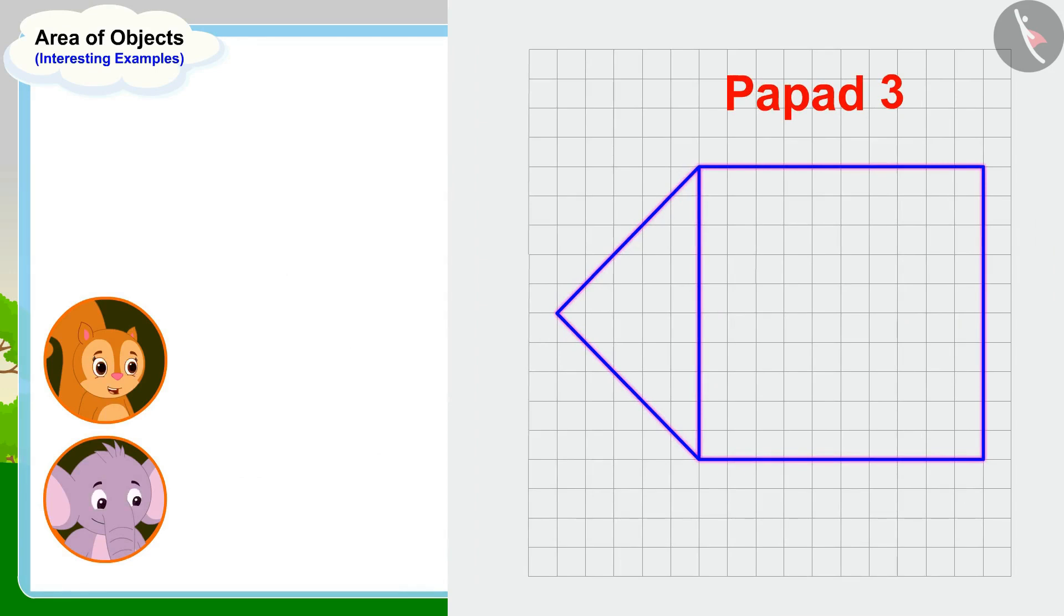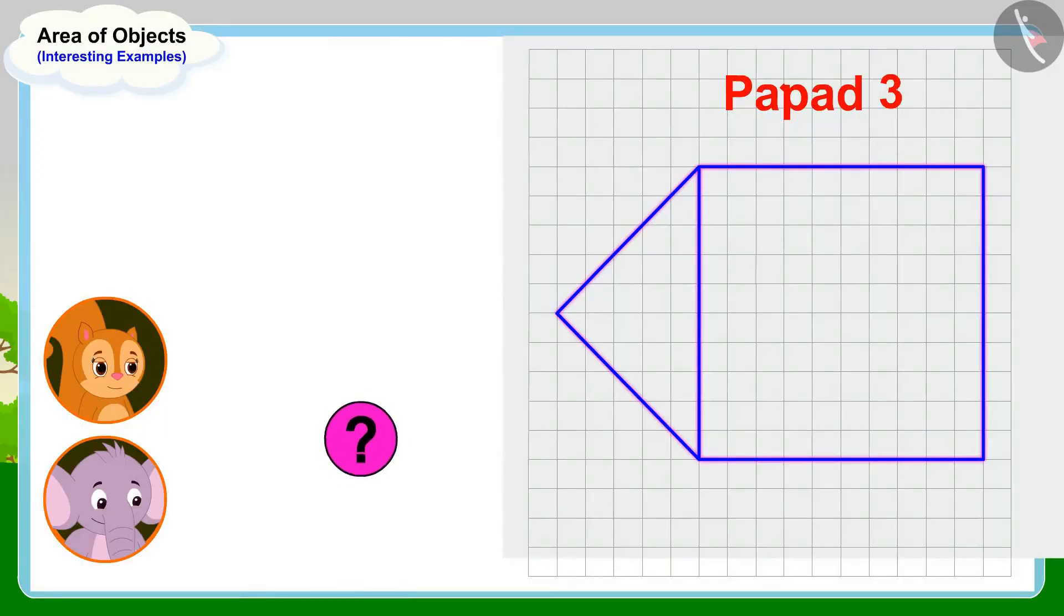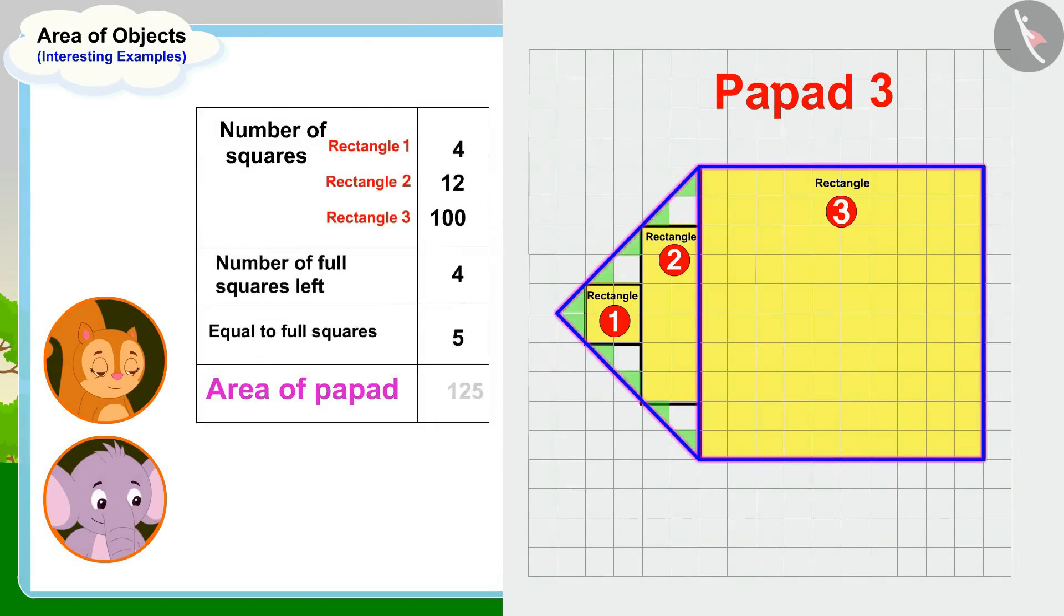Children, can you help Appu and Chanda by finding the area of this popper? If you wish to, you may stop the video and find the answer. We can find the area of this popper by making rectangles and squares in this way. The area of this popper is 125 square centimeters.